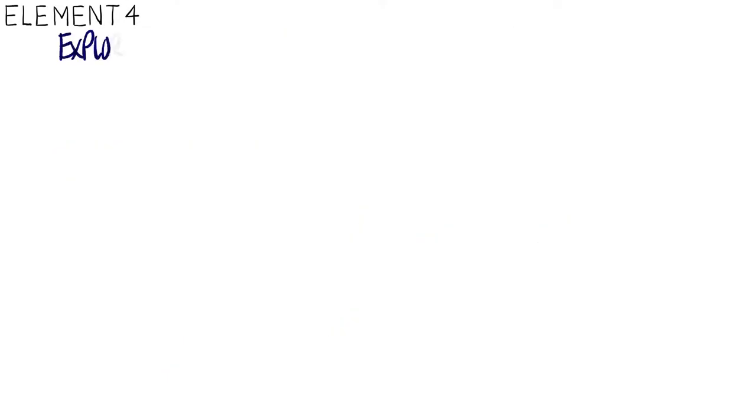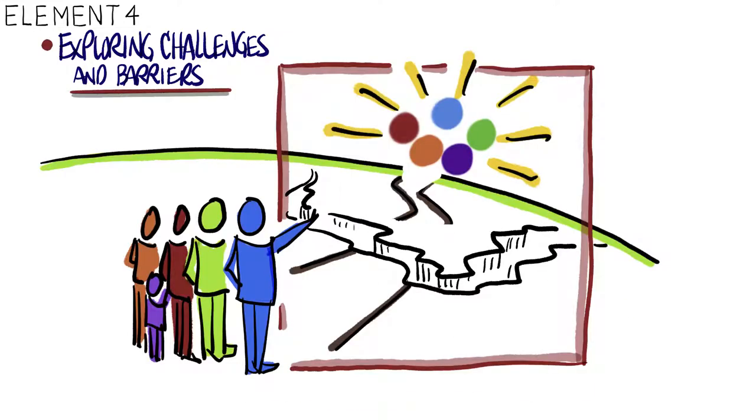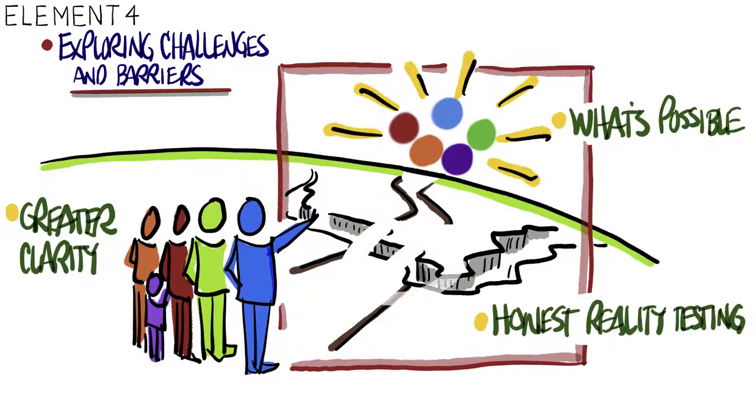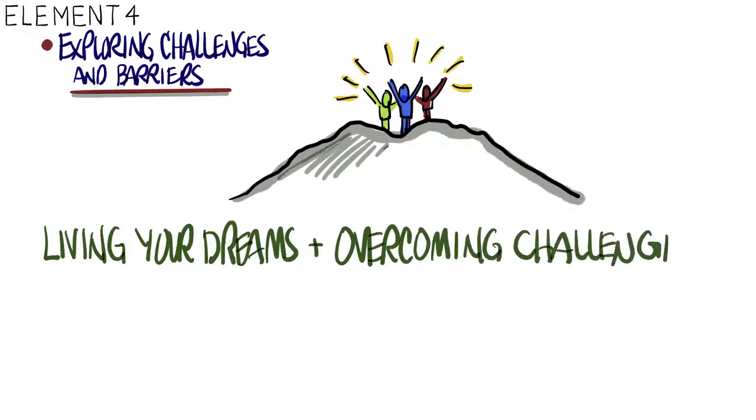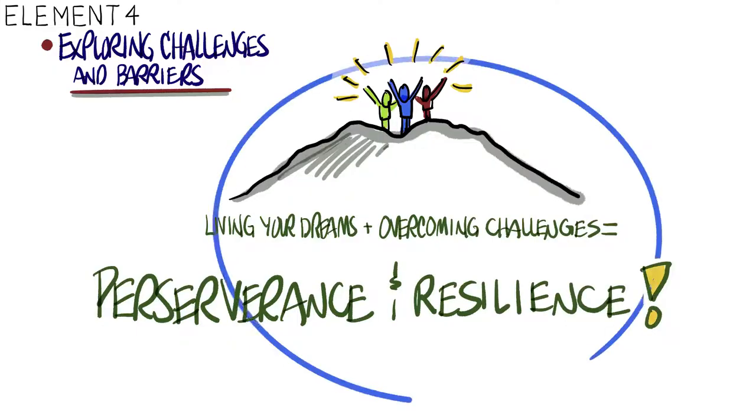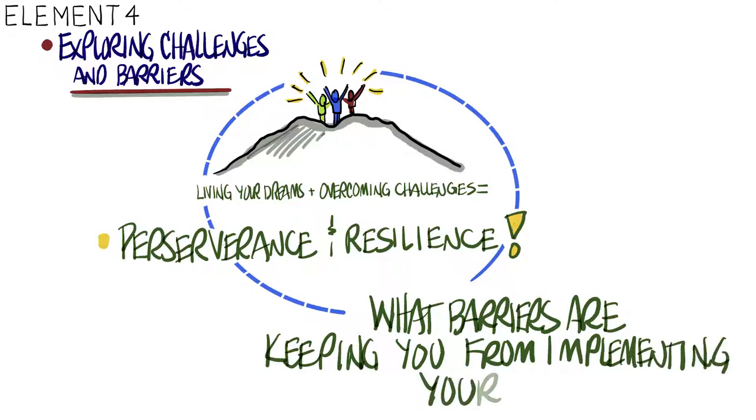Element four is exploring challenges and barriers. This step has a way of giving your path greater clarity by helping you do some honest reality testing about what is possible. It also gives you strength by providing insight into what types of actions you can take to overcome challenges. Living your dreams and overcoming challenges equals perseverance and resilience. Consider what we just discussed and ask, what barriers are keeping you from implementing your future?